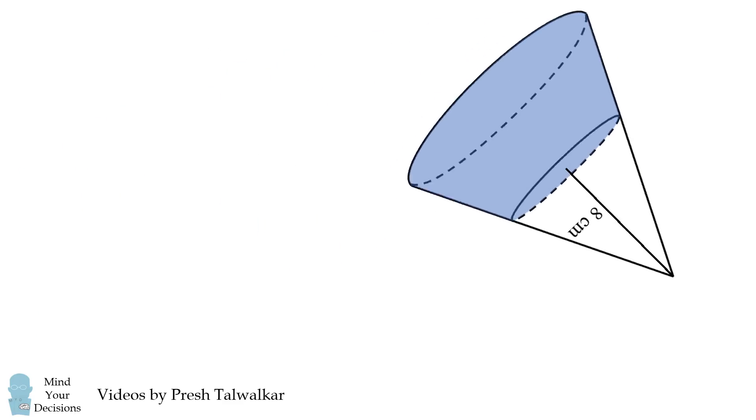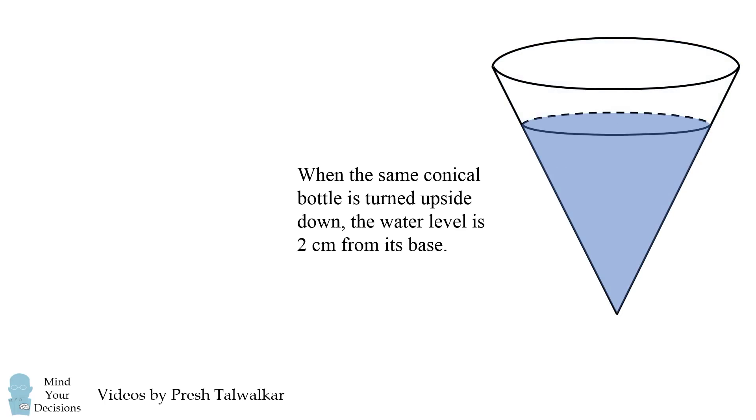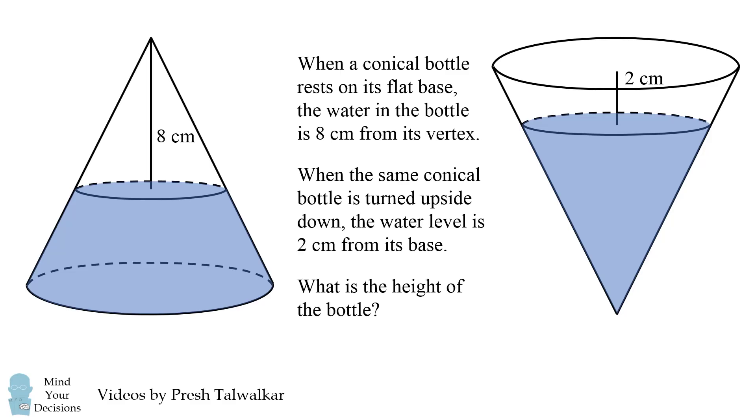When the same conical bottle is turned upside down, the water level is 2 cm from its base. The question is, what is the height of the bottle?